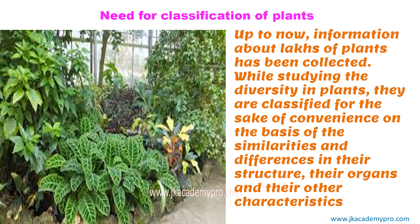So they had to classify them. They found that if we group them together, it will become very convenient for us to find more information about them. So they started classifying them — that is, grouping them on the basis of their similarities and differences. There are many plants that are similar in shape, similar in the leaves, similar in the kind of stem, and the height of the stem. So they started grouping those together, and they also grouped the differences separately. You can classify them in the form of similarities and differences in their structure, their organs, and their characteristics.